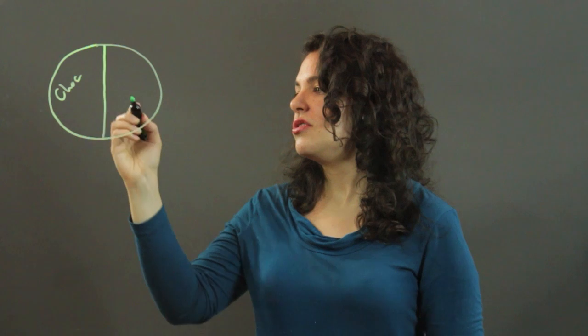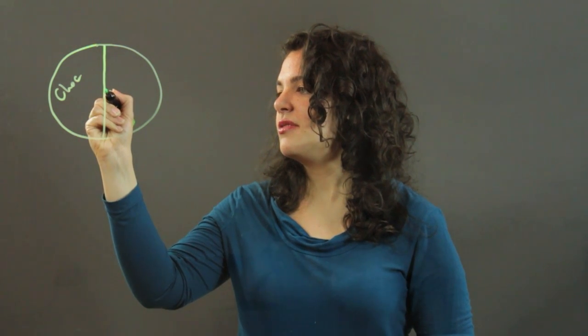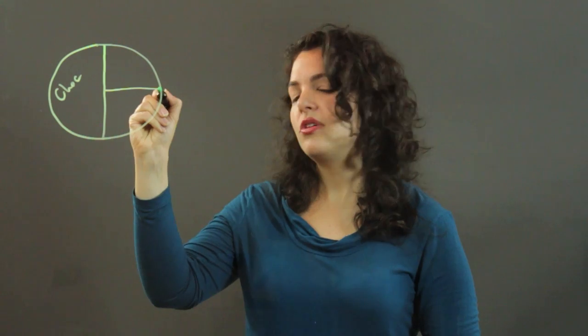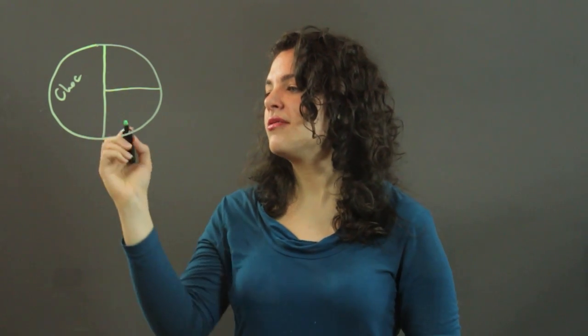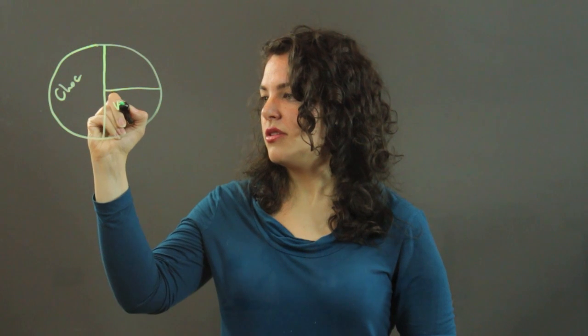And then a quarter of the students said that their favorite was vanilla. So then a quarter of this circle graph is dedicated to vanilla.